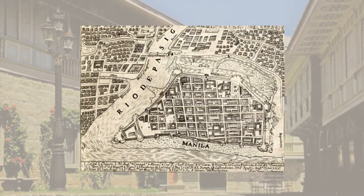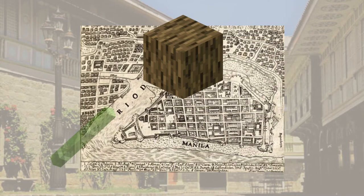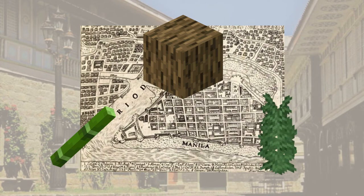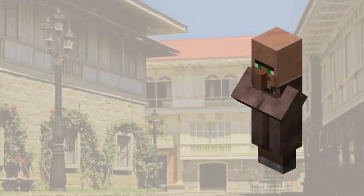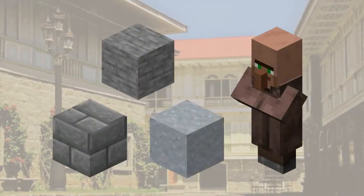Houses and churches in Manila were made of wood, bamboo, and nipa, but these materials are flammable, thus the buildings were easy to be engulfed in fire. The locals were prompted to change the materials to stone, bricks, and clay tiles, but building a stone house was quite challenging since no one was familiar with the materials at that time.